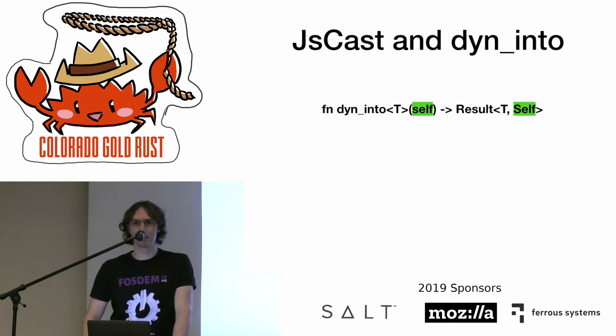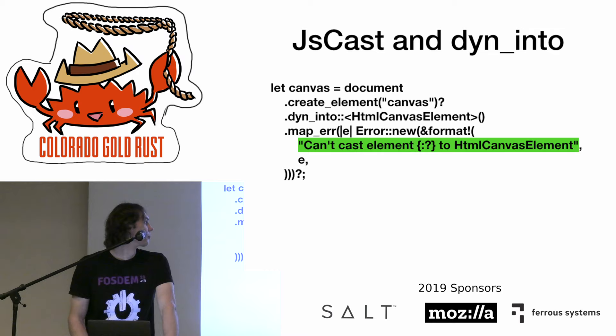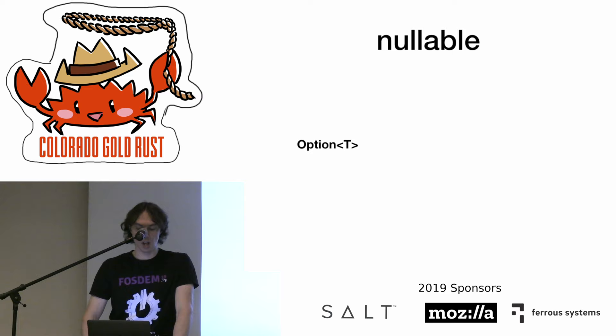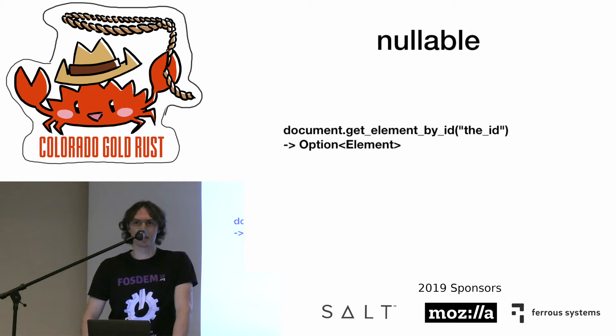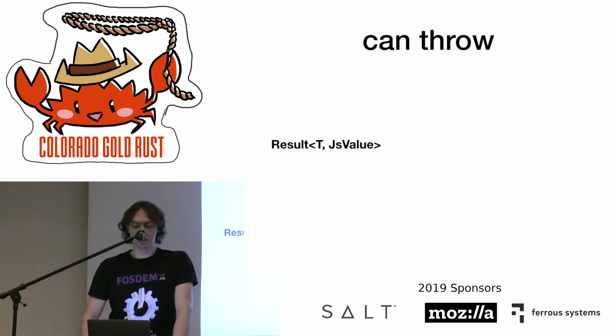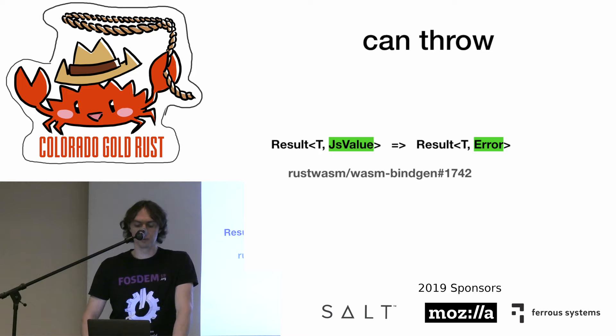To be able to draw on a canvas, you need it to be present on the page. In case of an error, the function returns the element itself, but it would be nice to have a meaningful error message. JavaScript functions can return different values, and sometimes they can return null. In Rust, we would have an Option in this case. There is an open issue in web-sys to check the return signature from the WebIDL.